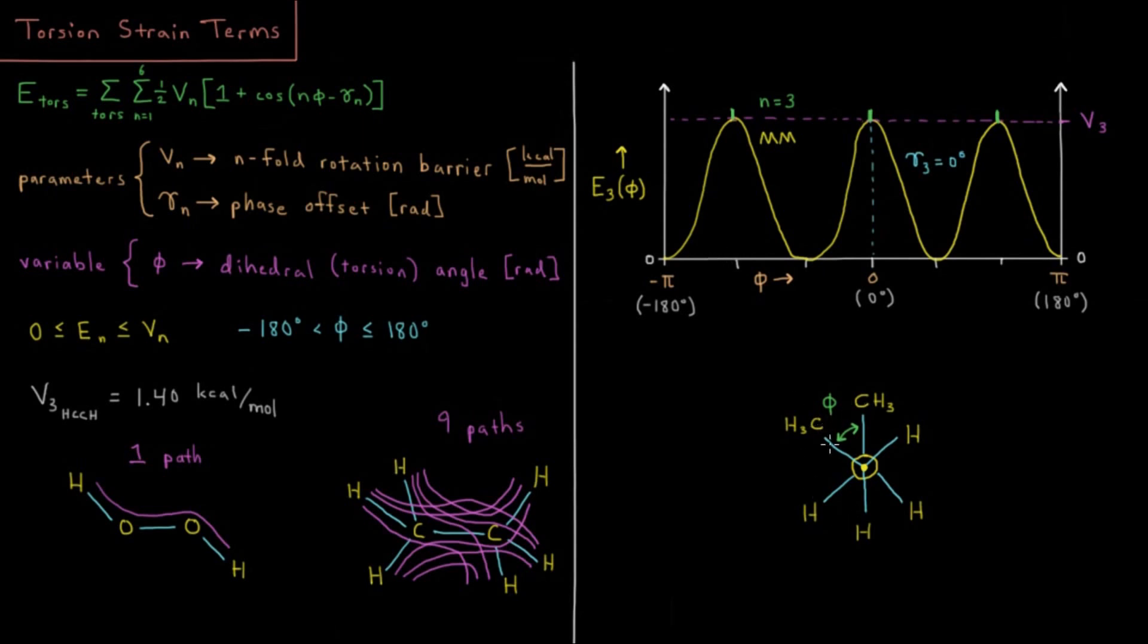For something like butane, you'd have an additional one fold term due to the clash of these two carbons as you go around. This conformation is higher in energy than when it's down here. So that can be represented as a combination of these different N fold terms.